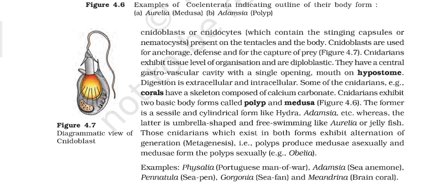The result of fertilization is a zygote, and this zygote develops into a larva. The larva of Cnidarians is ciliated and free-swimming. This larva is called the planula. Examples of Coelenterates or Cnidarians include Hydra, Obelia, and Aurelia.